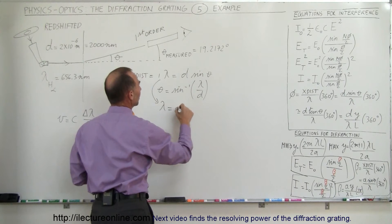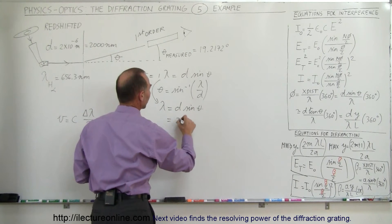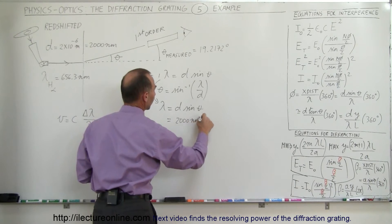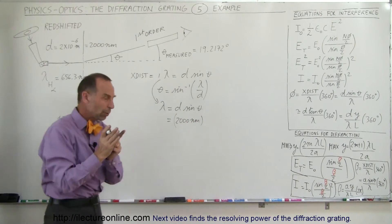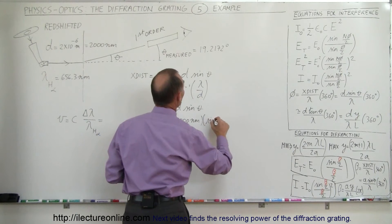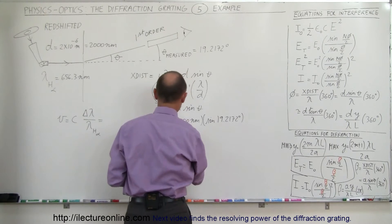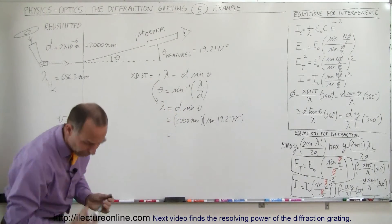Therefore, d is 2,000 nanometers, that's the slit width, or at least the distance between two adjacent slits. And we multiply times the sine of 19.2172 degrees. So what do we get for the wavelength?